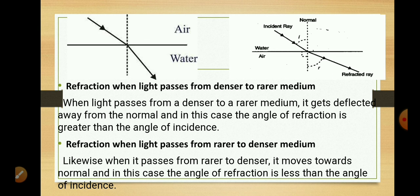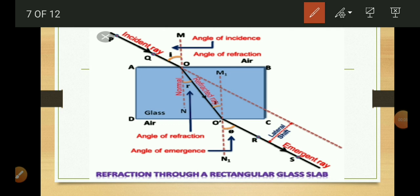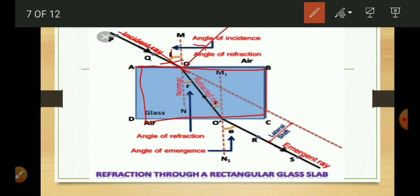So this is all about the basic cases of refraction of light. Next, we look at refraction through a rectangular glass slab to understand the phenomenon further. In this activity, when light is incident on a glass slab, a part of it gets reflected and another part gets refracted and travels inside the glass slab. This is our rectangular glass slab ABCD. First, refraction takes place at the first surface AB.